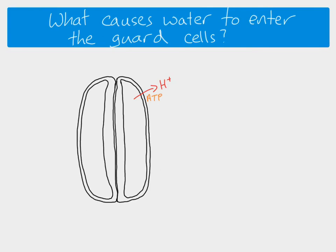So once hydrogen ions have been pumped out, that allows potassium ions to be moved in — this movement actually opens the potassium ion channels. The build-up of hydrogen ions causes the potassium ion channels to open, so we end up with lots of potassium going in. And because all the potassium goes in, that lowers the water potential inside the cell, and if the water potential decreases then water will move in — and that's how it works.